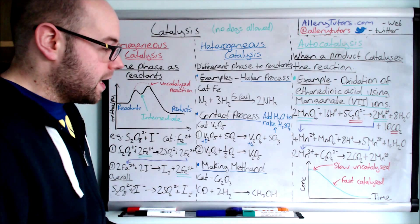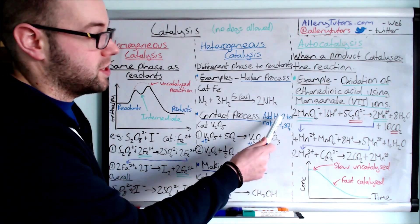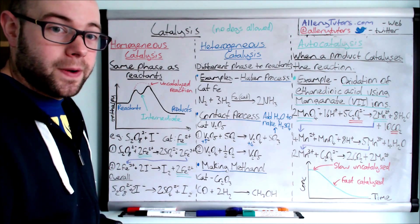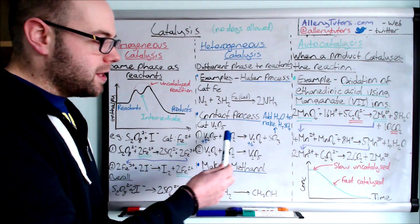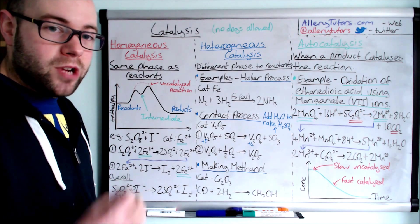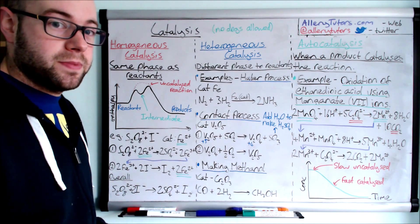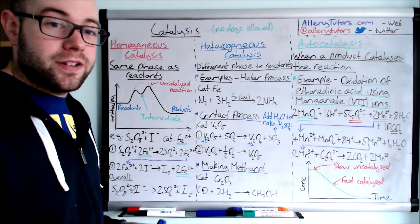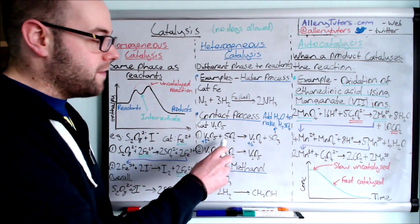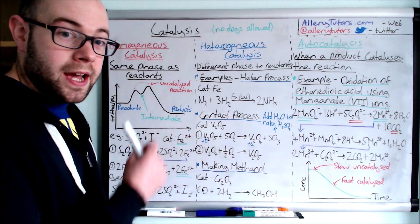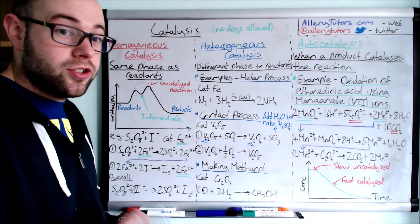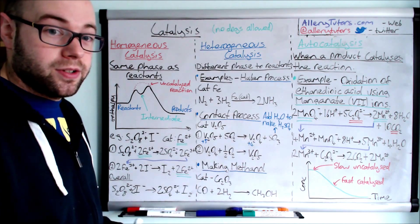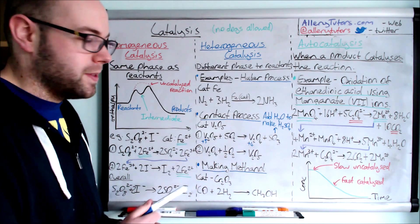And this can react with water to form sulfuric acid which is really useful because we can sell that and make money from it. Now you might think what's the point, but actually some reactions when we burn fossil fuels in particular do produce sulfur dioxide. And sulfur dioxide is really acidic when it goes into the atmosphere. If the sulfur dioxide can be trapped and then turned into something useful, that should be a benefit for the environment and also economically because you can sell the sulfuric acid.